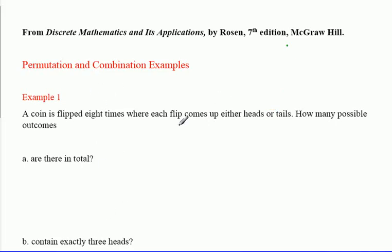Okay, for this example or set of examples we're going to talk about permutations and combinations. They're taken from Rosen's discrete mathematics book, but they're similar to other examples you'll find in any other discrete math, probability, or statistics book. Our situation in Example 1 is a coin is flipped eight times where each flip comes up either heads or tails. So it's a fair coin. How many possible outcomes are there in total?